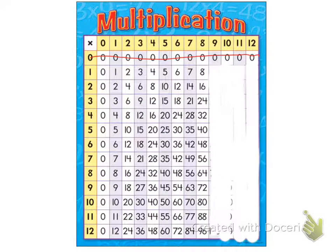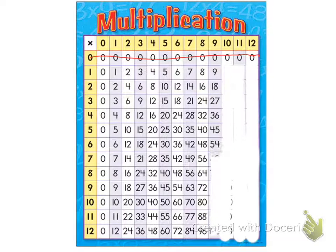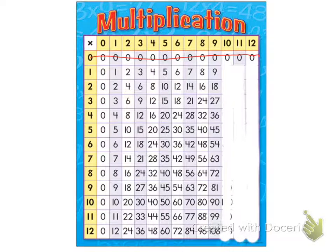And the multiples of nine are nine, eighteen, twenty-seven, thirty-six, forty-five, fifty-four, sixty-three, seventy-two, eighty-one, ninety, one hundred and eight.